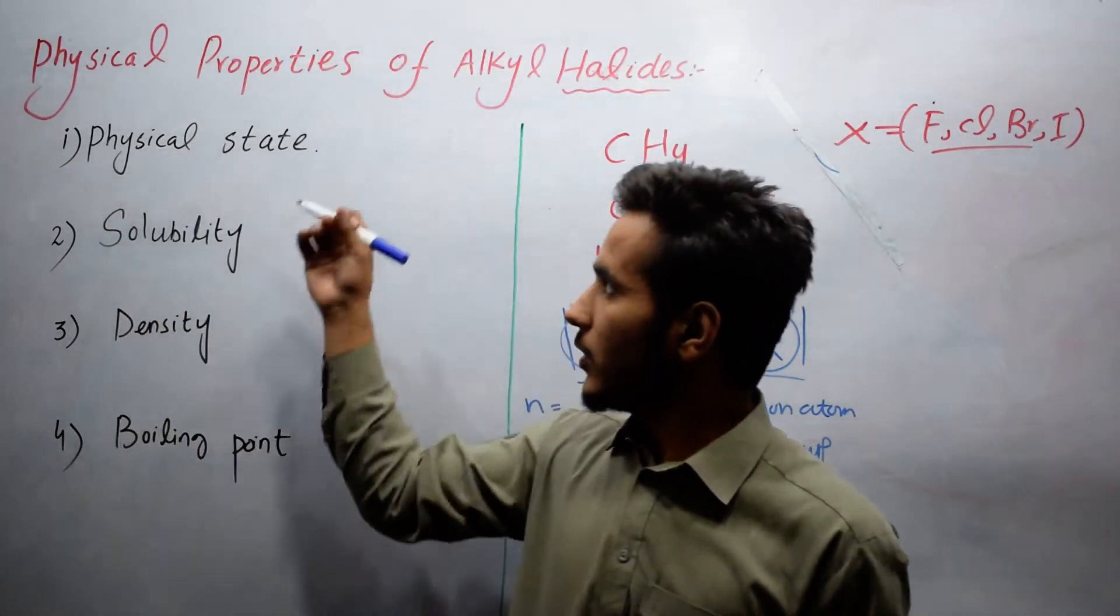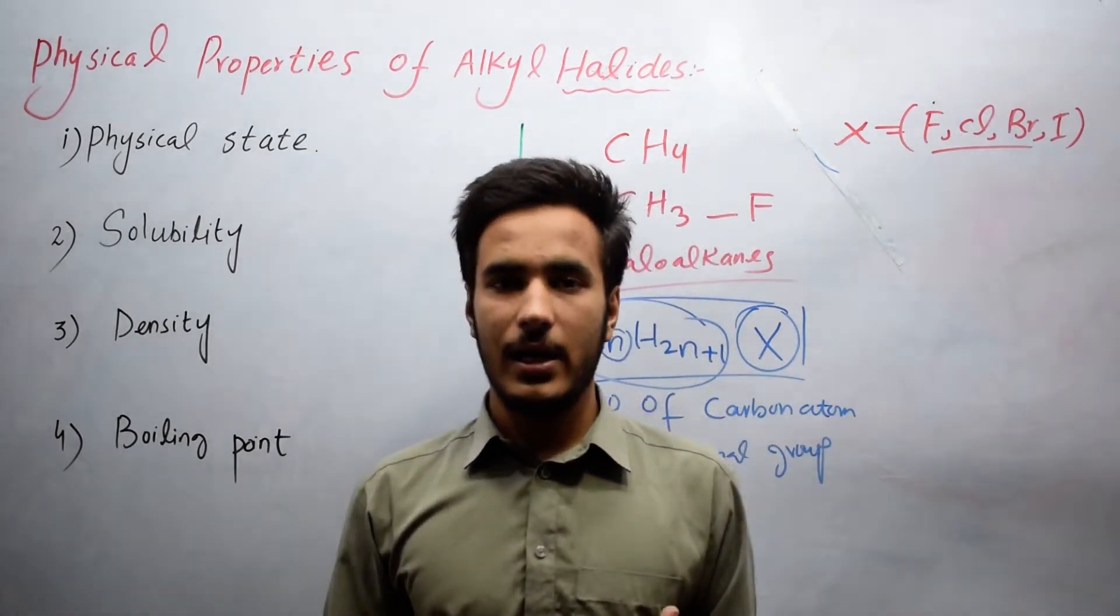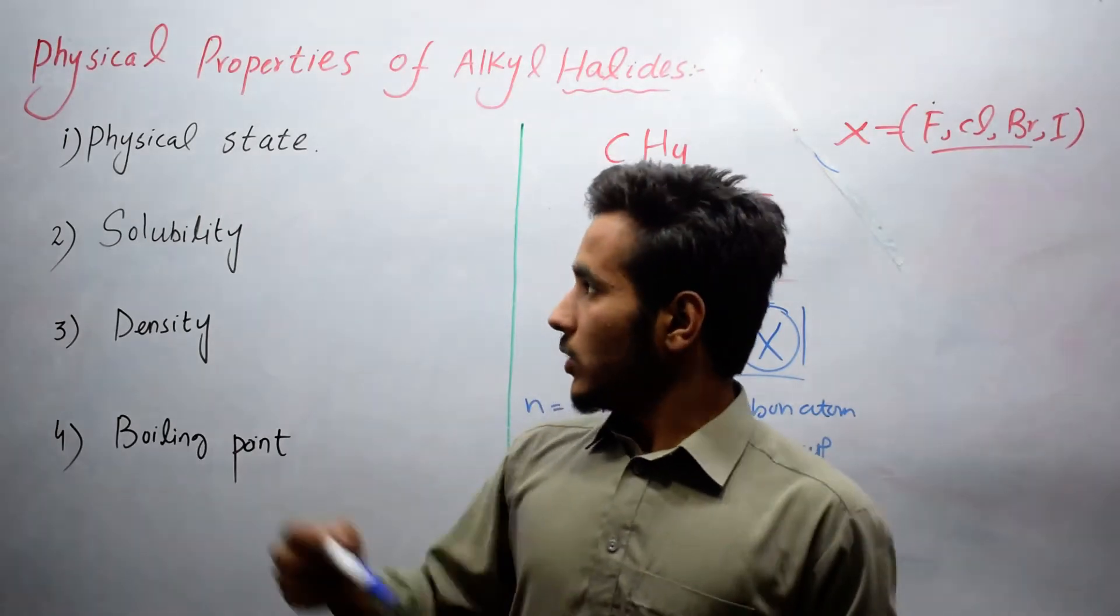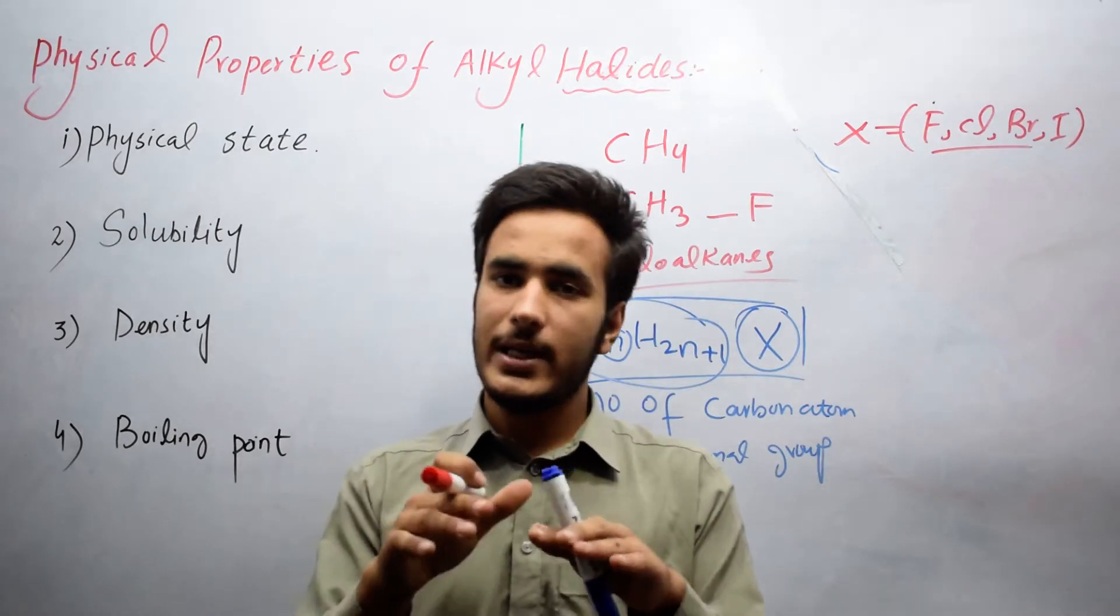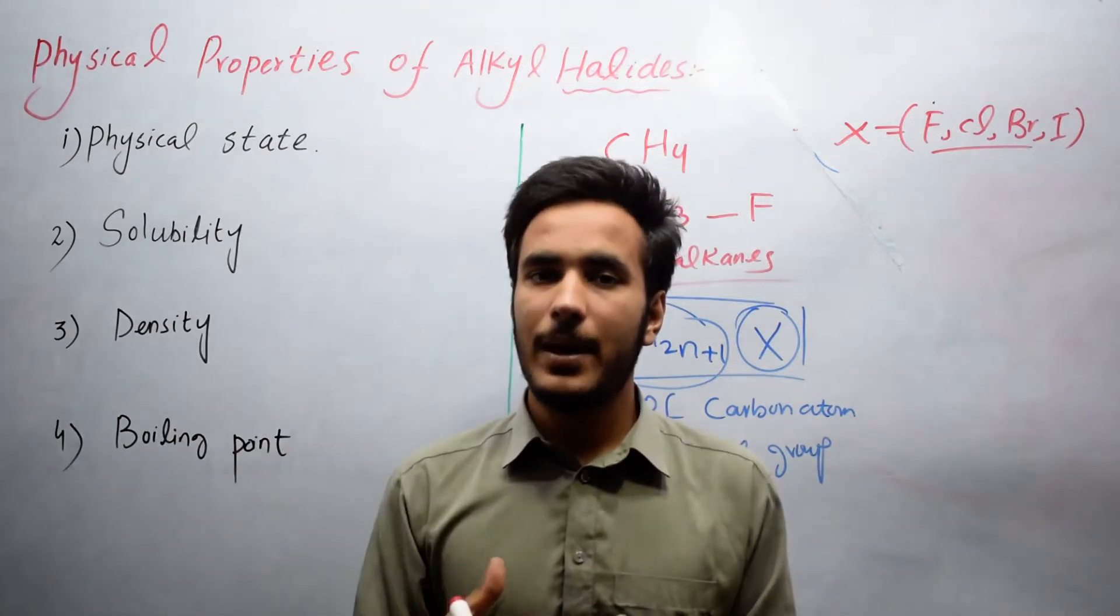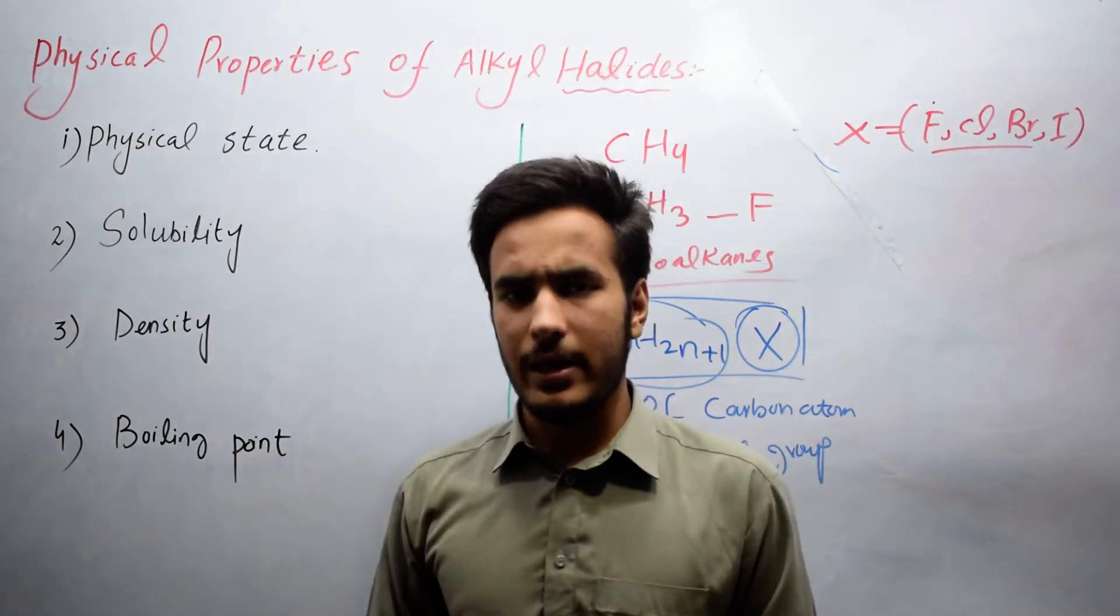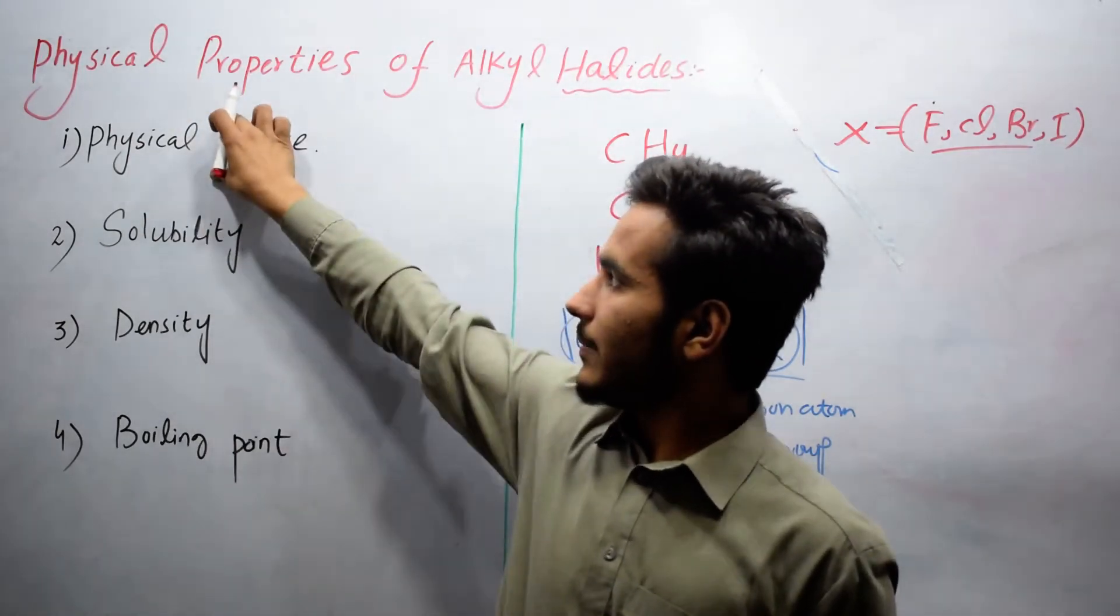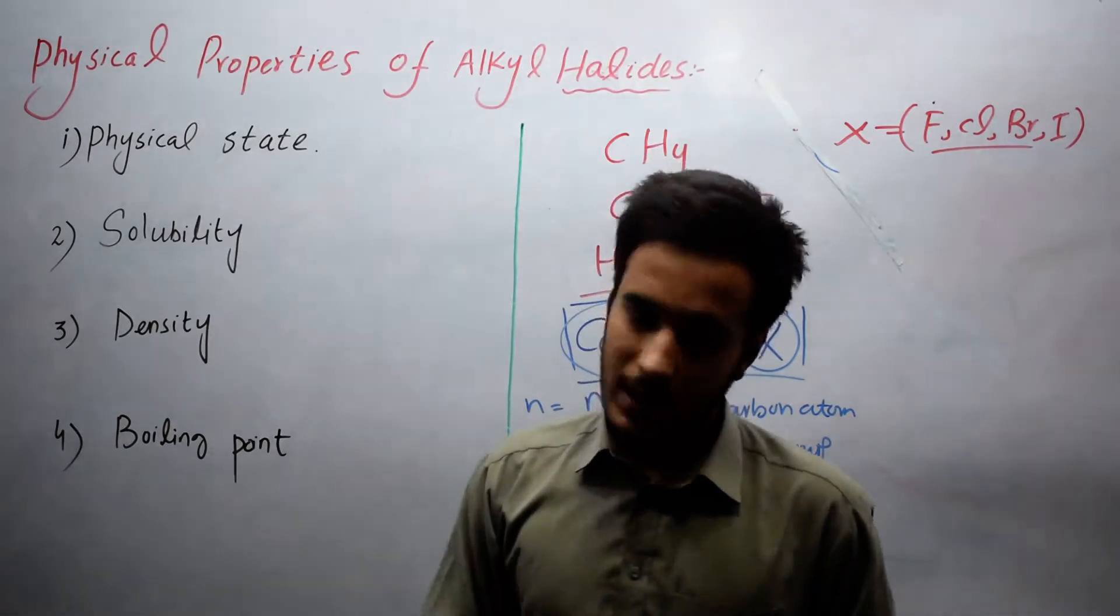Now we will talk about how the physical properties of alkyl halides are different from other organic compounds. In physical properties, first we know that all organic compounds which have lower carbon atoms are gases. The next 13-14 members are liquids, while the higher are solids at room temperature. The physical state of alkyl halides is also like that.